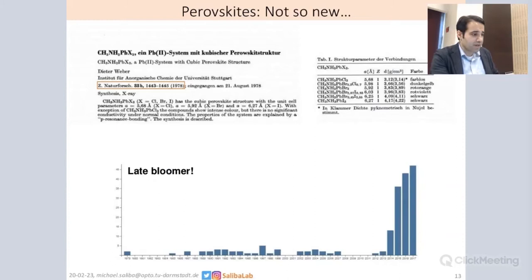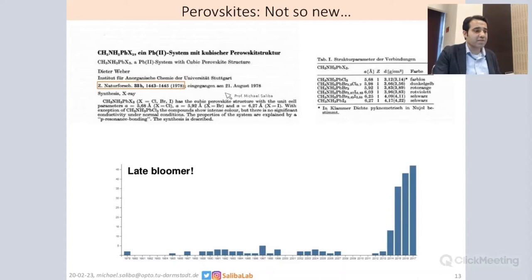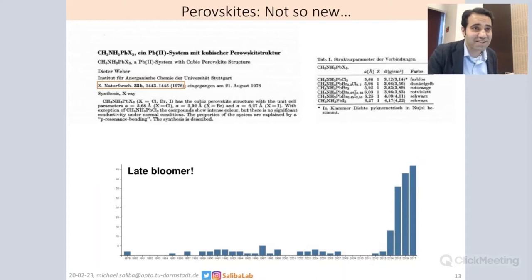Without getting too much into the details, these kinds of perovskites were discovered in 1978 — you can see it here — published in Zeitschrift für Naturforschung by Dieter Weber in that year. The paper was written in German and wasn't really noticed. So in 1978 there was hardly any citation, and then it started exploding. From 2014 everybody started citing this paper — it was simply rediscovered in that year.